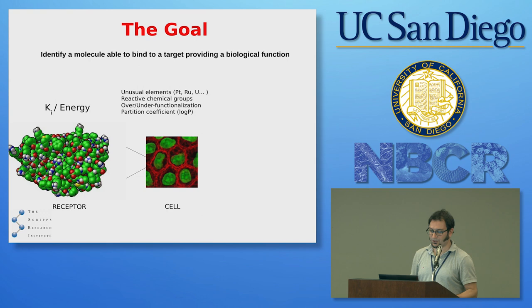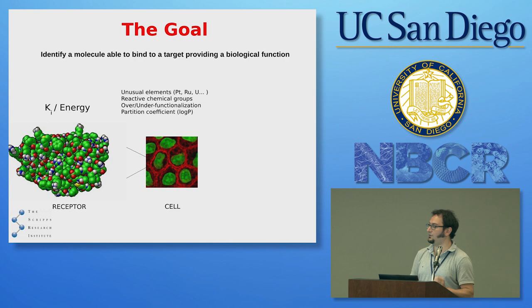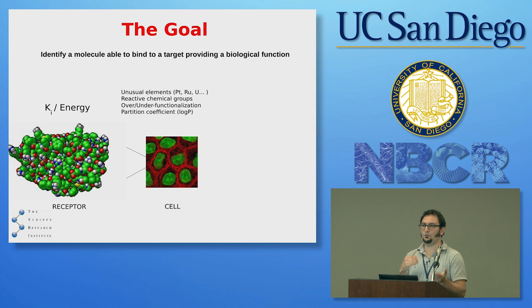You want to avoid over-functionalized compounds because if you have too many hydrogen bond acceptors and donors, they can stick to everything. Same thing with under-functionalized compounds — if they are too lipophilic or have only one or two hydrogen bonds, it is hard to achieve specificity. The other essential requirement is that these compounds should have well-defined physicochemical properties, in particular the partition coefficient, defined as log P — essentially the ratio of partitioning in a solution of equal amounts of water and octanol.